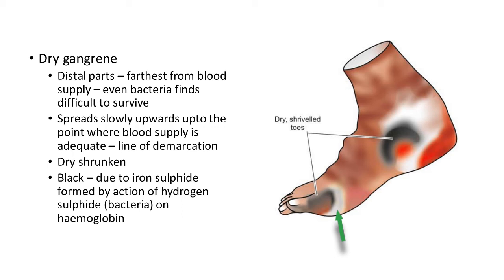At this point there is a clear line of demarcation. The affected area — distal to the line of separation — is dry, shrunken, and dark black, just like a mummy. This black color is given by iron sulfide, which is formed by the action of hydrogen sulfide produced by bacteria on hemoglobin.